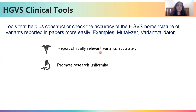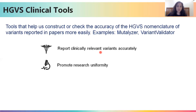These tools also help promote uniformity in research. In papers published before the HGVS notation was standardized, there is a lot of variation in how the same variant is reported, and details such as the variant's location or which transcript was used often slip through the cracks. Using these tools removes those problems and promotes uniformity so it is easier to understand which variant is being discussed.